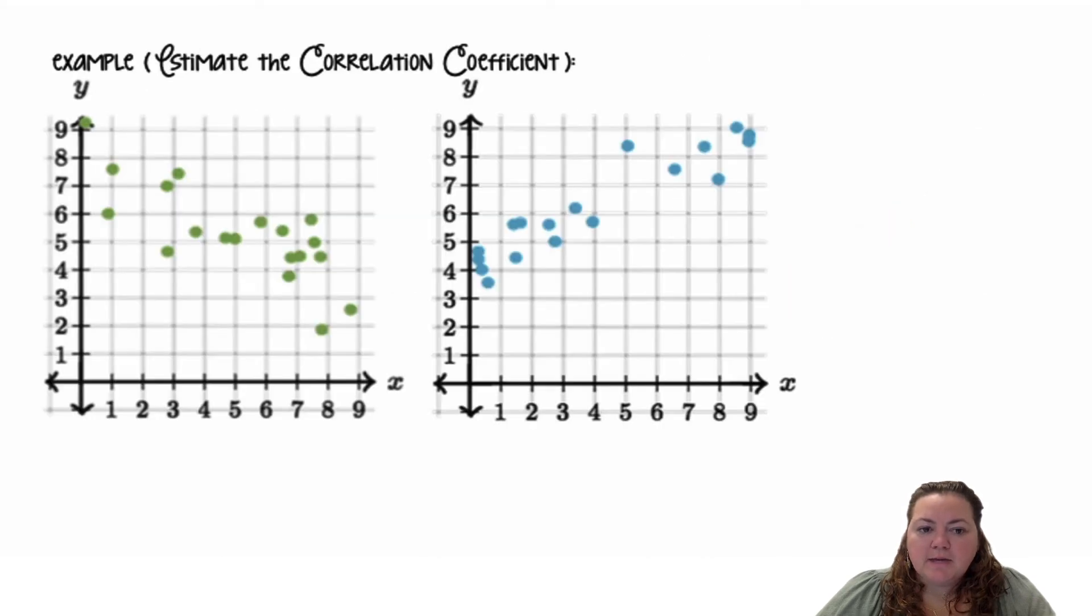All right, estimate the correlation coefficient. So we have two scatter plots here and just looking at the scatter plot, what would you estimate the correlation to be? This is going to take a lot of practice to get good at. So you're looking at how spread out those dots are.